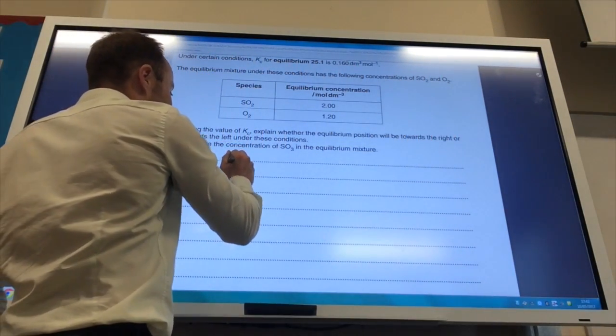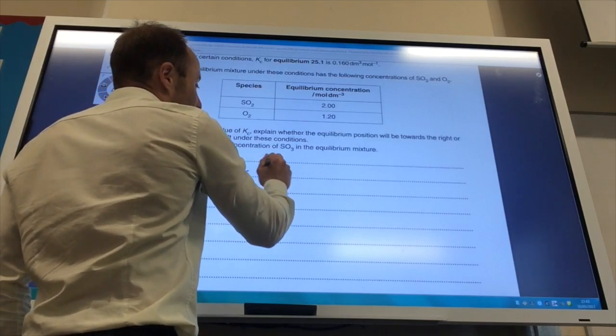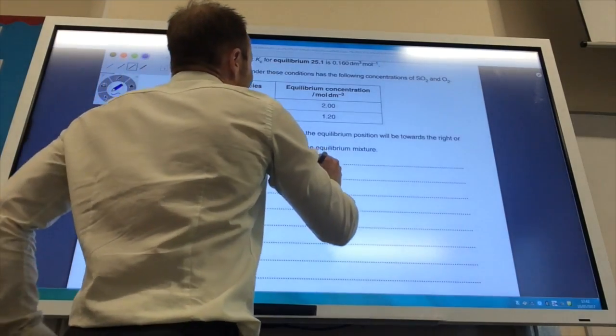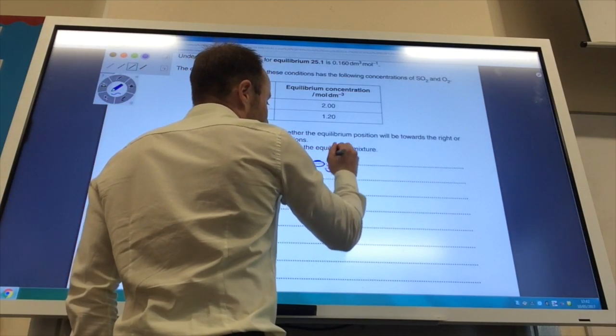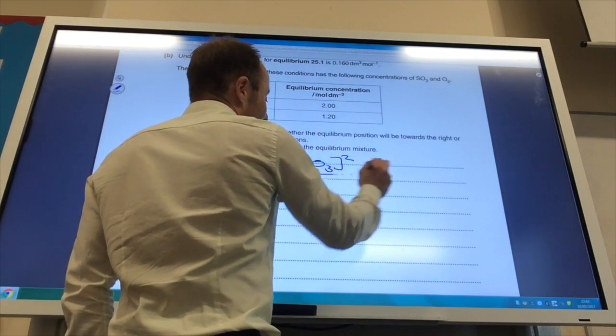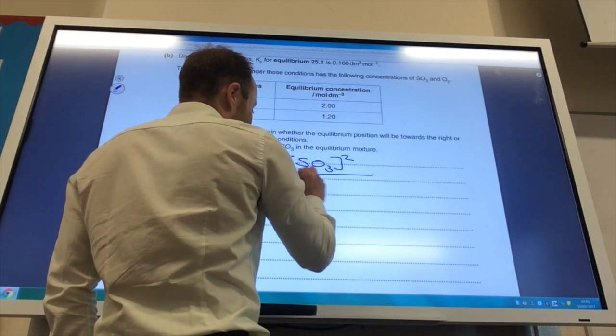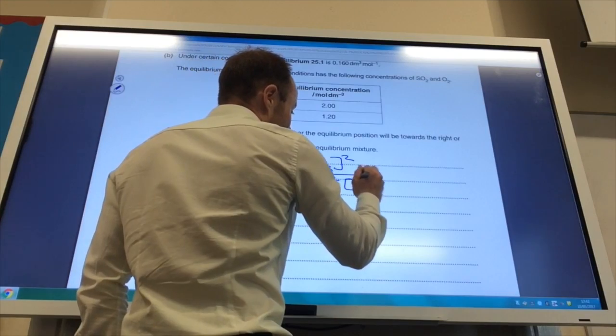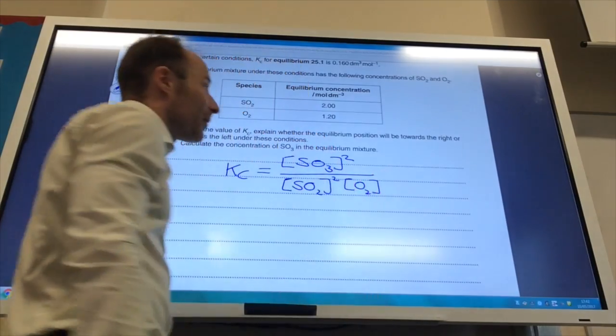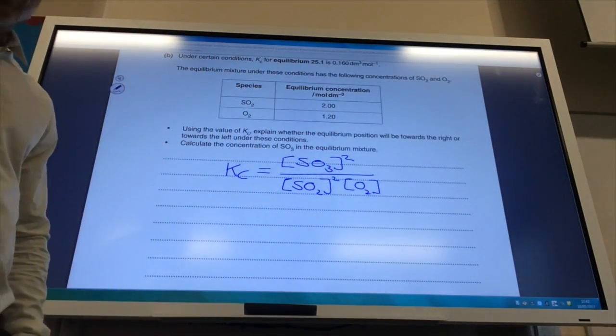Well, as we know, Kc is equal to the concentration of the products, which is SO3, and that's squared, over the concentration of the reactants, which is SO2 squared, and then O2, like so. So it's quite small, isn't it?